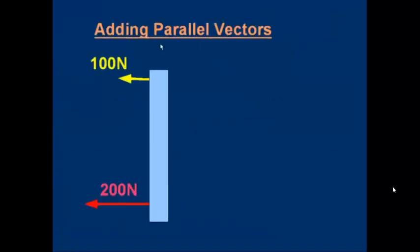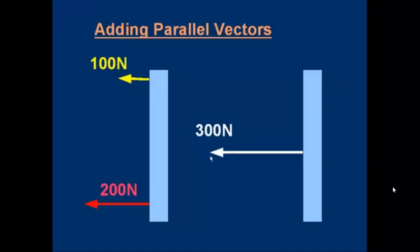Let's start with about the simplest possible problem — we're going to add two parallel vectors. Suppose we've got an object shown in blue with two forces acting on it: 100 newtons and 200 newtons, yellow and red. These could be the forces from two ropes, and both forces are to the left. The question is, what is the resultant of these forces? The answer is 300 newtons to the left. If you're drawing that with an arrow, the length of the arrow equals the length of the yellow arrow plus the length of the red arrow — 300 newtons to the left. For parallel vectors, we just add the magnitudes together and get the direction from the direction of the original vectors.